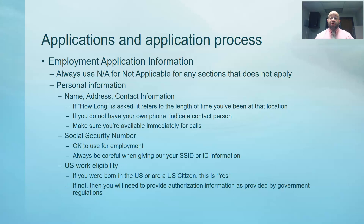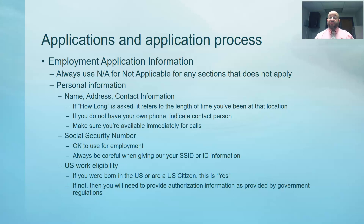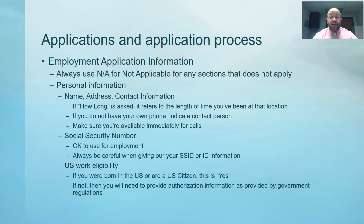Name, address, and contact information goes without saying — they need to know how to reach you. When it asks 'how long,' that means how long you've resided at your current address, not the dimensions of the property. If you've lived there five years, put five years; if you just moved, put two weeks. They may ask for your previous address if it's been under two years, for verification purposes. If you don't have your own phone, leave a contact number — a house phone or a parent's number — that's sufficient.